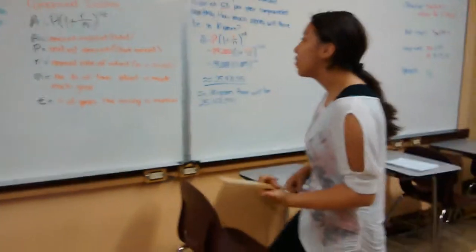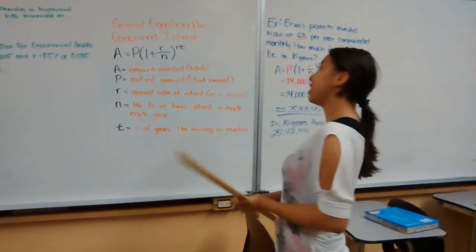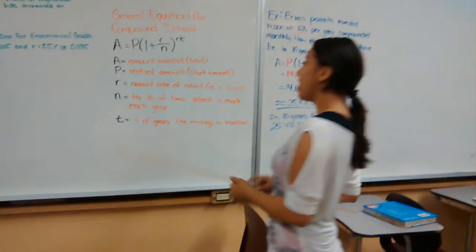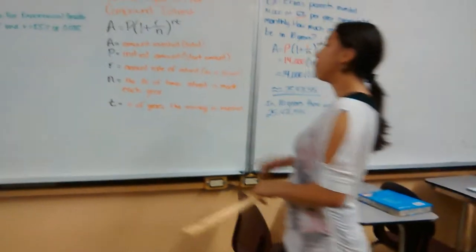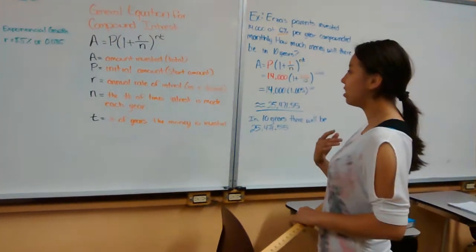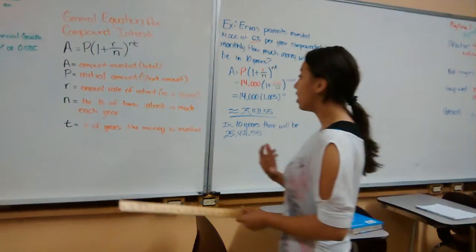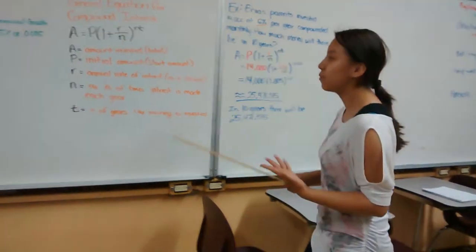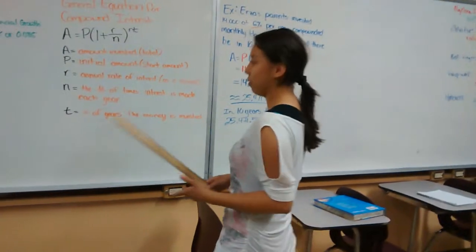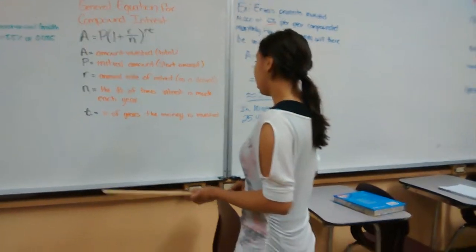Next one would be the general equation for compound interest. The equation is A equals P times open parenthesis one plus r over n close parenthesis to the power of n times t. Where A equals the amount invested total, P equals the initial amount or start amount, r is the annual rate of interest as a decimal. You must always convert a percent into a decimal. Then n equals the number of times interest is compounded each year.